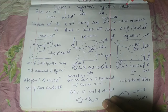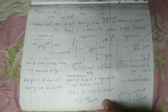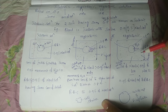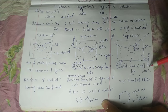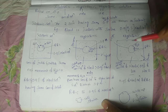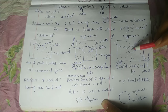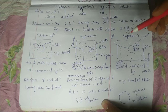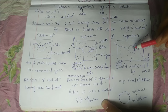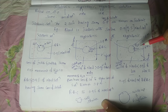Ippudu hypotonic solution gurinchi telisko nnamu. Hypo ante less annamu kada. Adhi less solution of NaCl ane dhi, less count undi - 0.9 percentage of NaCl solution kanna less count undi. Ikkada low concentration ekkudu - RBC cell ane adhi high concentration kada. Ippudu osmosis jarukali ante, movement lower concentration of solution ninchi higher concentration of solution lo ki water movement jarukutundi.